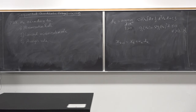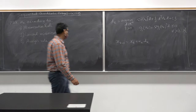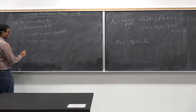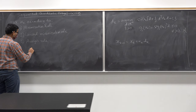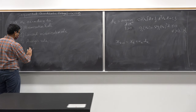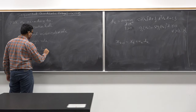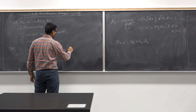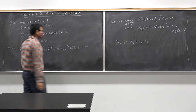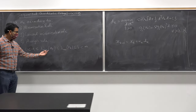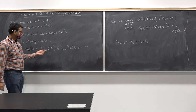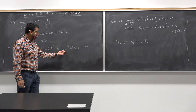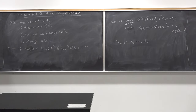If you pick alpha_k according to these rules, the following theorem applies. If 0 < a ≤ lambda_min(H_k) and lambda_max(H_k) ≤ b < infinity for all k — meaning the minimum eigenvalue of H_k is strictly positive and bounded below by some positive real number a, and the maximum eigenvalue is bounded above by a strictly finite b — then x_k converges to a stationary point.